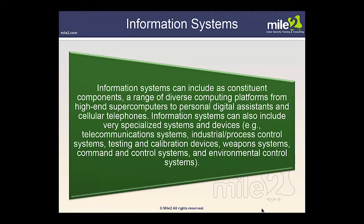Information systems can include many components — many diverse computing platforms from high-end supercomputers to personal digital assistants and cell phones. Information systems can also include specialized systems such as telecommunication systems, industrial process control systems, testing and calibration systems, weapon systems, command and control systems, and environmental control systems. There are so many pieces that make up the big picture and such a variety of types of systems.